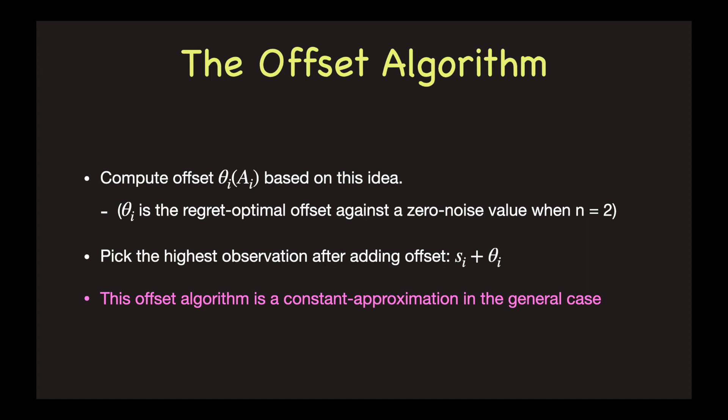Fortunately, this fix works, and the regret of this offset algorithm is at most a constant times the optimal regret, and this holds for any n.